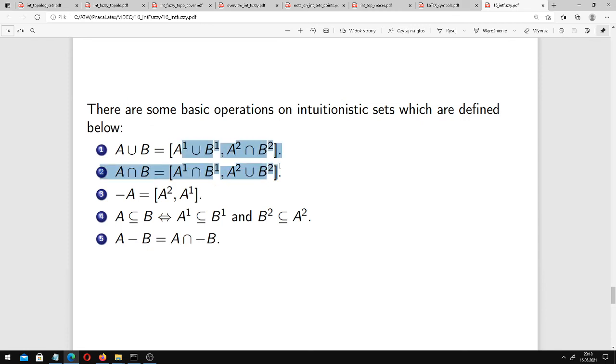Some basic operations have been listed below. For example, union of two intuitionistic sets means that we calculate the union of their truth sets and intersection of their false sets. And analogously here, intersection means intersection of truth sets and union of false sets.